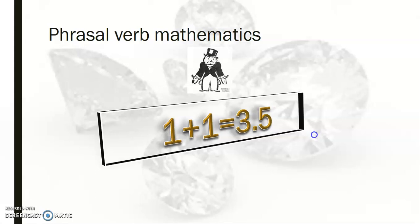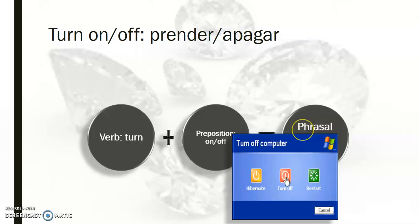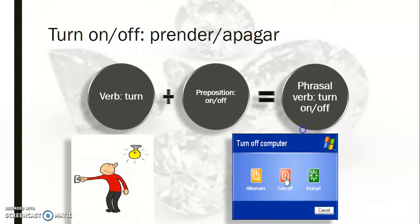There are hundreds, maybe thousands of phrasal verbs. We can turn pretty much any verb into a phrasal verb. Common phrasal verbs that we know are 'turn on' or 'turn off' — 'turn' being the verb, 'on' or 'off' being the preposition. We know that 'turn on' is 'prender' or 'encender,' while 'turn off' is 'apagar.'